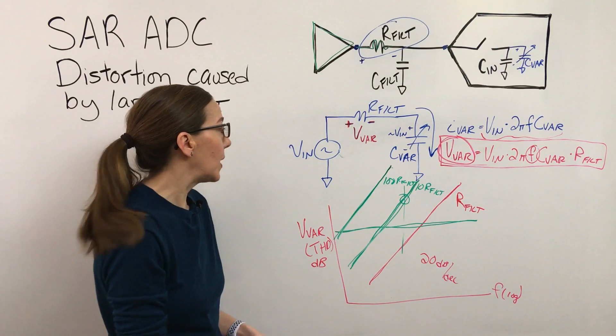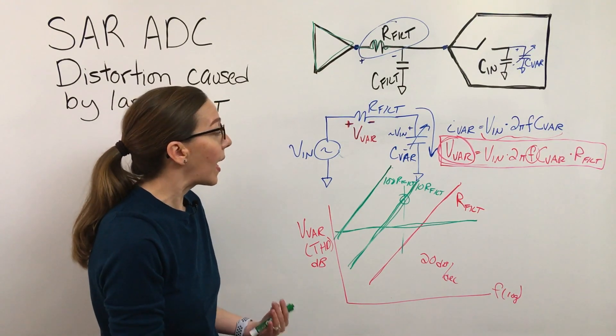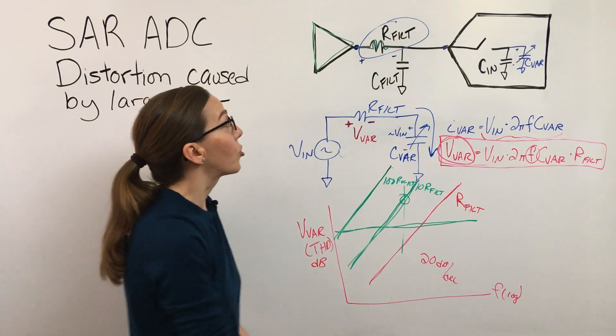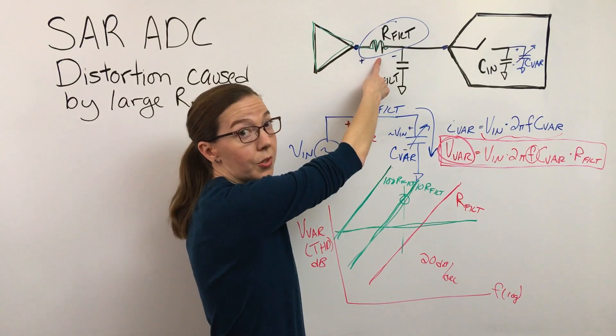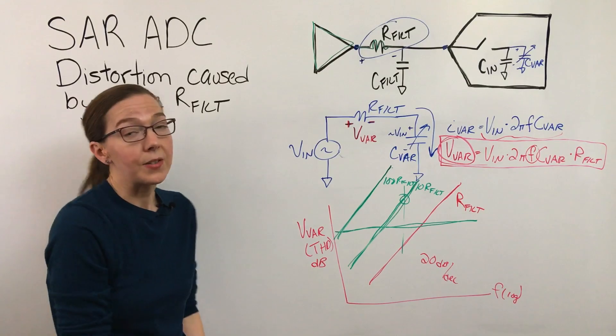There are other sources of error and distortion that will improve, but this is not one of them. So if you're seeing distortion in your system that is worse than you expected and it's not moving as you slow down the sample rate, you could try lowering this resistor and see if that helps. So that's just one thing to think about as you're designing this circuit.